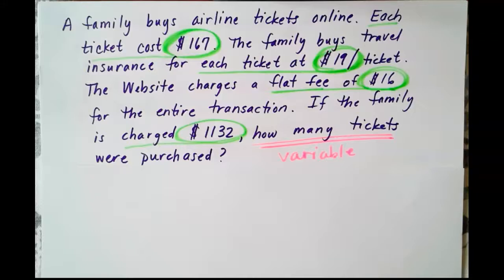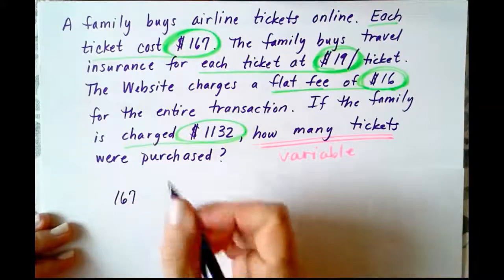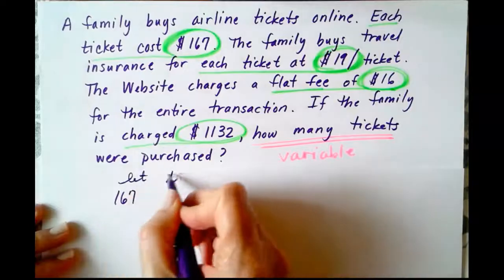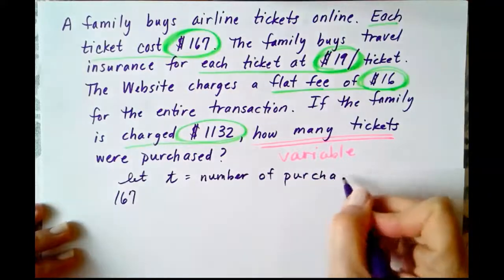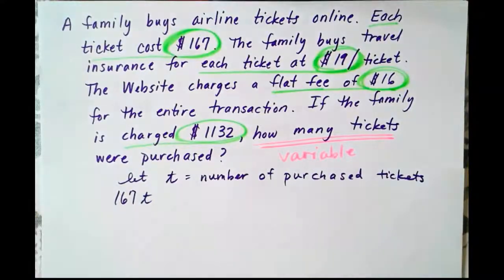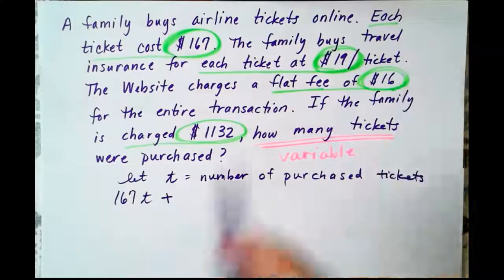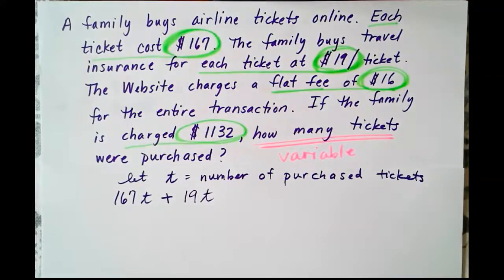So we're going to use these givens. The next thing I'm going to do is I'm going to come down on my blank paper, and I'm going to start writing down everything that we know to be true. So we know that a ticket costs $167. So if we're going to let T represent our number of purchased tickets, then $167 times T is going to give us the amount of money we're going to pay for just the tickets. But we need to add on $19 for every ticket.